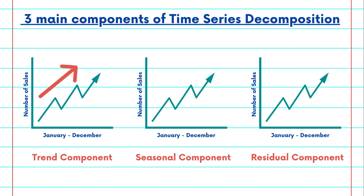The second is the seasonal component. The seasonal component accounts for regular, repeating patterns in the data. In the case of our sales data, this component highlights the predictable sales spikes during the holiday seasons. Understanding seasonality helps in planning and marketing.